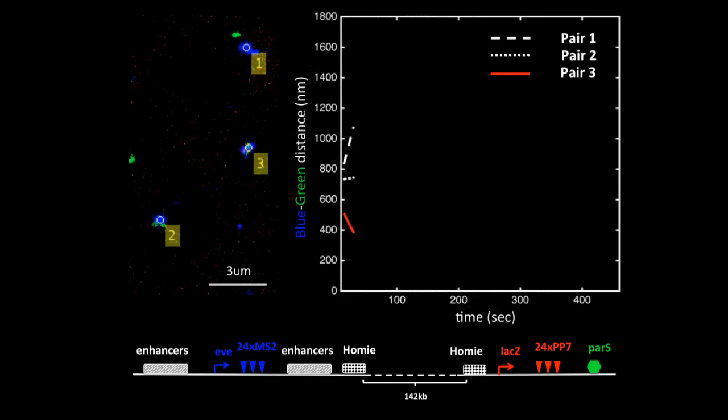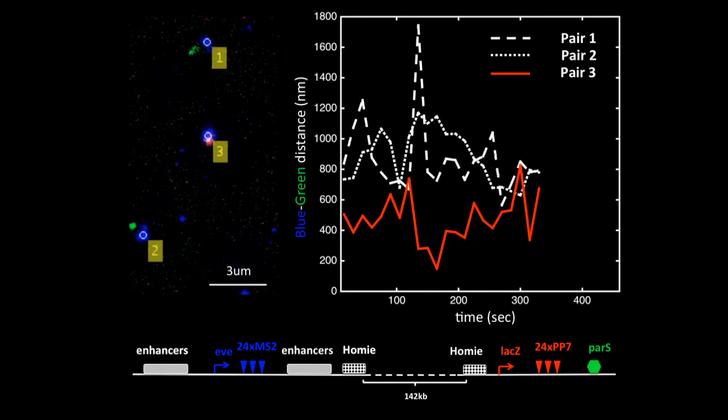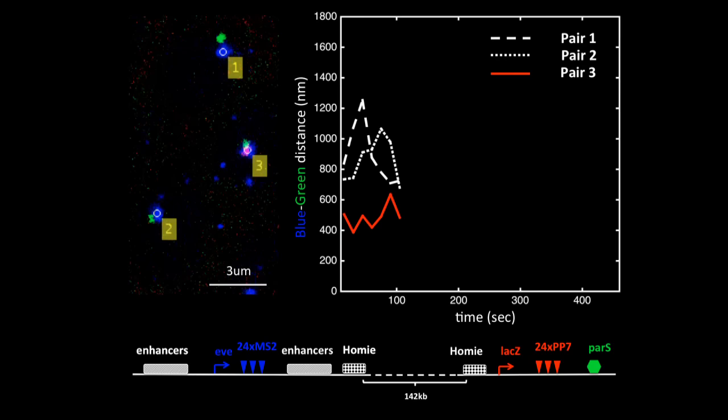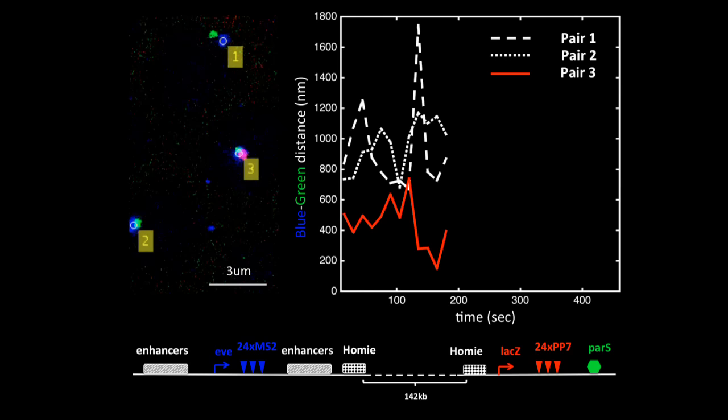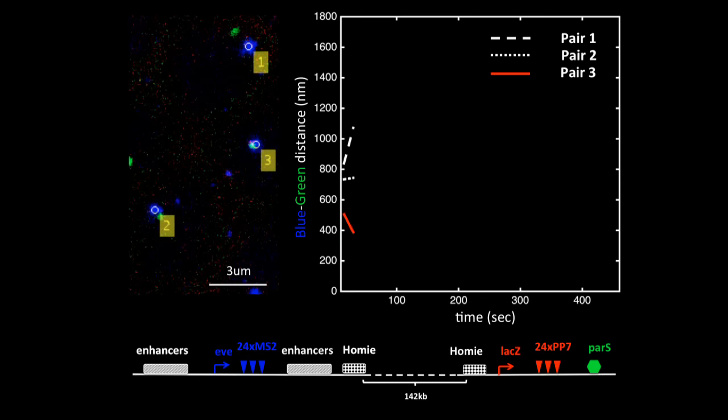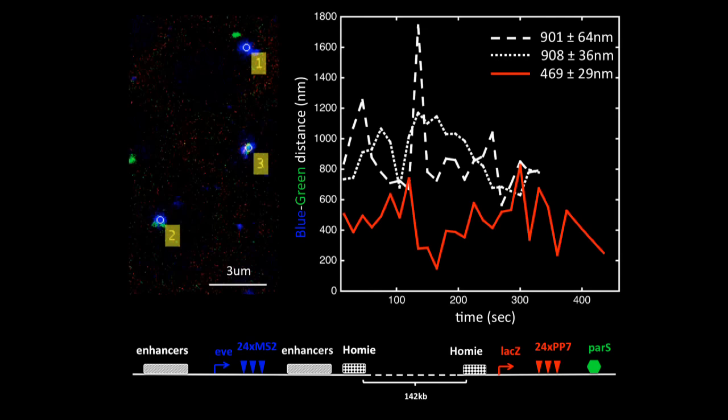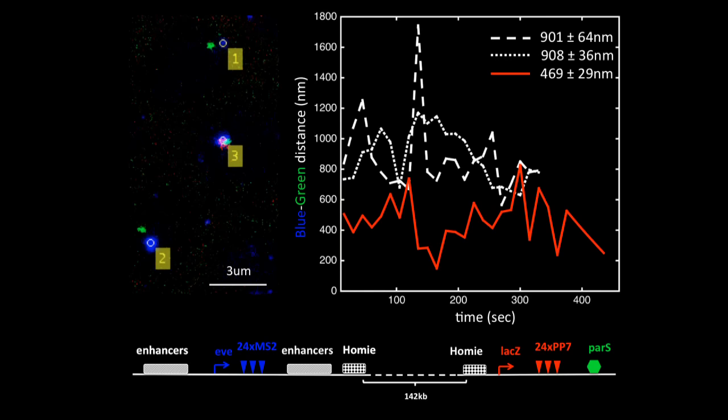Of course we did some serious quantification. These are three nuclei from the previous movie, and these two panels are synchronized. The panel on the right shows the distance between the blue and the green spots as a function of time. You see three traces. The red line is pair three where the transgene is activated. The dashed lines are pairs one and two where you don't see red. Clearly, you can see the blue-green distance when the red is on is shorter than where red is not on.